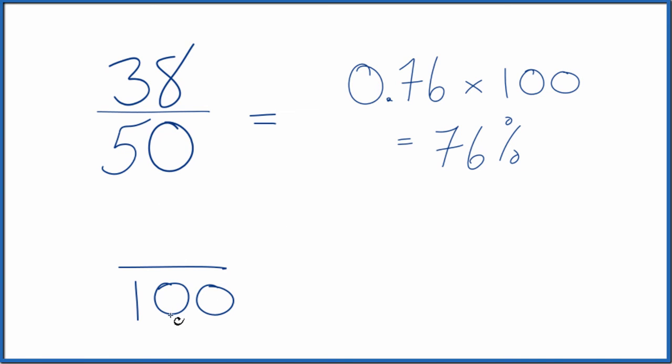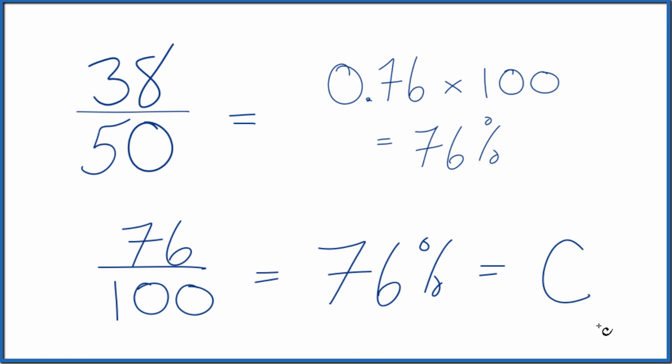So if we doubled 50, that gives us 100. Let's double 38. That gives us 76. So when we have a number over 100, that's just a percent. 76% like we found before. Again, that means you got a C.